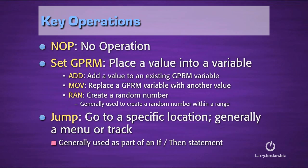Within scripts, there are three operations we're going to use over and over again: NOP, SetGPRM, and JUMP. NOP means nothing happens — no operation — it's like a placeholder. SetGPRM is how we place a value into a variable, and the three we'll use most will be ADD, MOVE, and RAN. ADD adds a value to an existing GPRM variable. MOVE replaces a GPRM variable with another value. RAN creates a random number within a range, setting the minimum and maximum value. JUMP takes us to a specific location — generally a menu or a track — and we also use it as part of an IF-THEN statement: if a specific value is true, then jump to this menu; if a different value is true, then jump to that track.